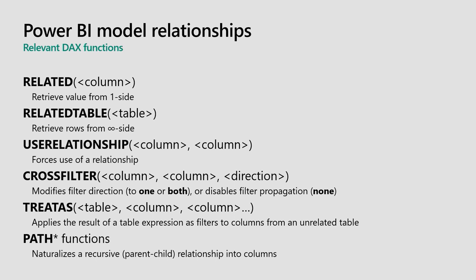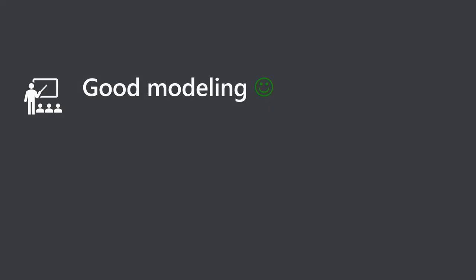In the DAX function library, there are functions dedicated to working with relationships, and I'll demonstrate as many as time allows. At the bottom of these are the PATH functions—I'll mention them now because I won't demo them. While there's no self-referencing relationship capability, if you have parent-child hierarchy data (like an org chart or general ledger), you can use PATH functions to naturalize these into columns and build a fixed-level hierarchy. There is no native parent-child hierarchy concept inside tabular models.